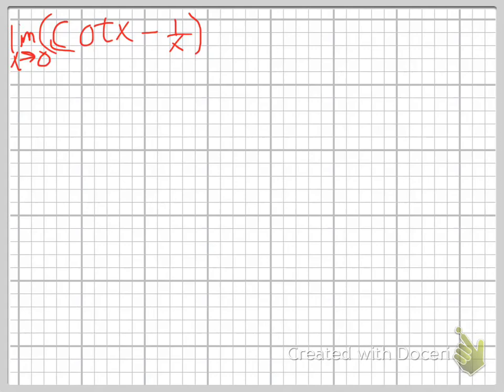Let's take a look at the limit as x approaches 0 of cotangent x minus 1 over x. First of all, you can't take the limit of this as it appears, so we're going to go ahead and combine these two fractions.